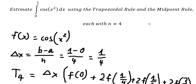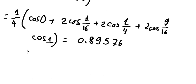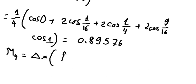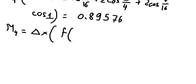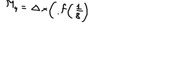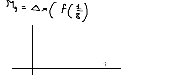Now we go to the Midpoint Rule. We put M with n equals 4. So we have delta x for the midpoint. We need to select the midpoints, so we have 1 over 4 divided by 2, and we start at 1 over 8.